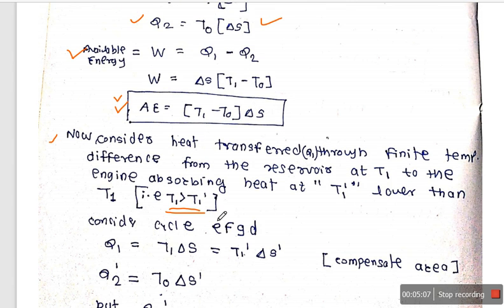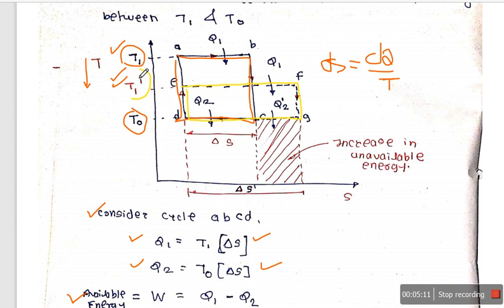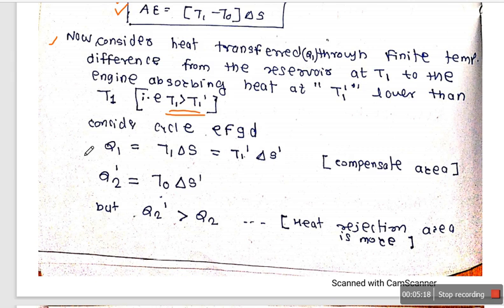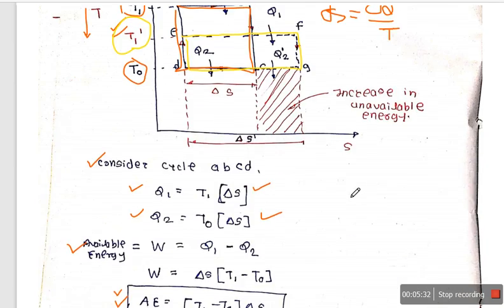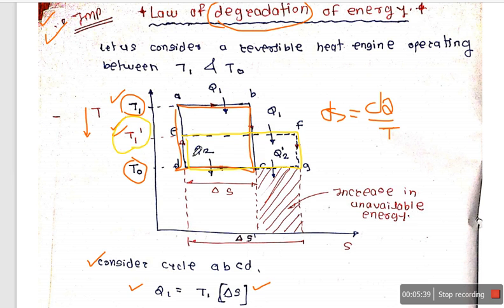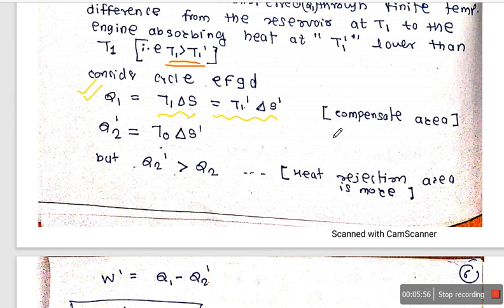The condition is T1 greater than T1 dash, so the next cycle has heat addition at T1 dash. For that cycle, Q1 equals T1 dash times delta-S, because the area compensates. If we decrease the heat addition temperature but keep the input heat Q1 the same, and look at the area under the EF line, for both processes the heat addition is the same, compensating the area.